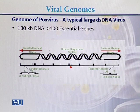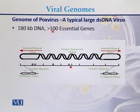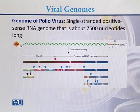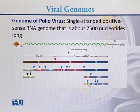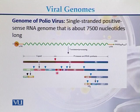Pox virus is a typical large double-stranded DNA virus whose genome consists of 180 kb DNA with approximately 100 genes. Polio virus has a single-stranded positive-sense RNA genome approximately 7,500 nucleotides long, encoding specific polypeptides and proteins.